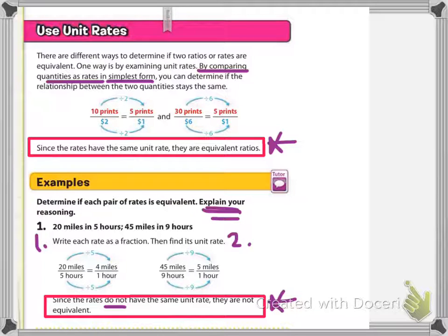You have 20 miles per 5 hours. If you divide by 5, the unit rate is 4 miles per hour.